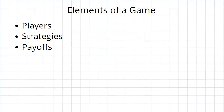A game in the context of game theory is defined by three main aspects. You need to have players in the game, you need to have strategies that each player can choose from, and as a result of those strategies there need to be payoffs.